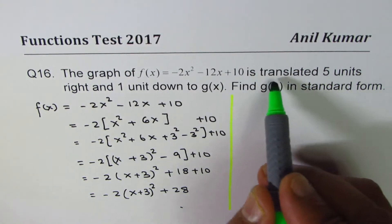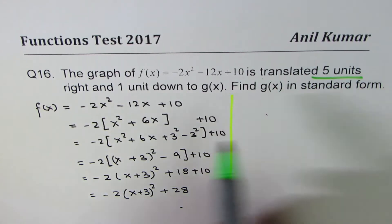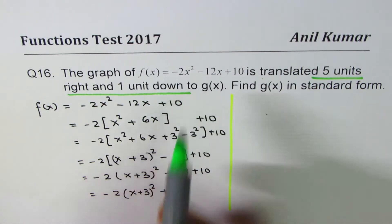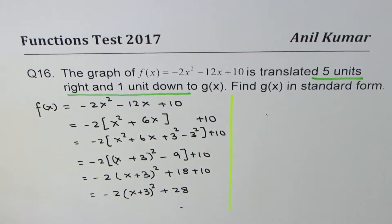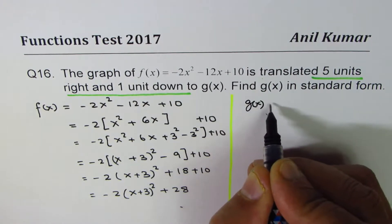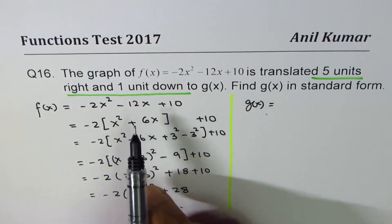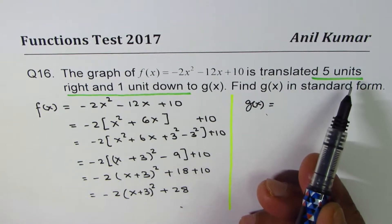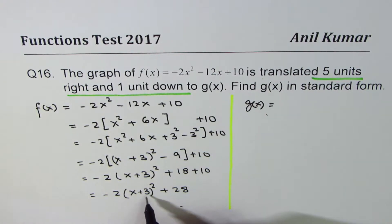Now we do the transformation. It is translated five units right and one unit down, so g(x) equals: when I say five units right, that means we'll do minus 5 here.